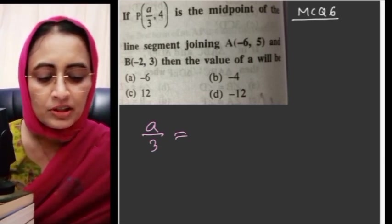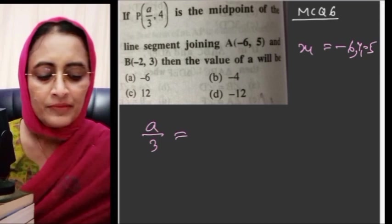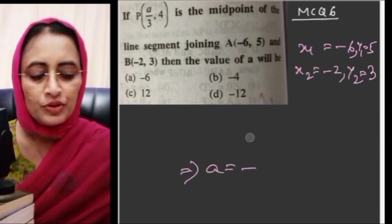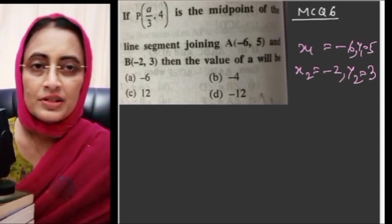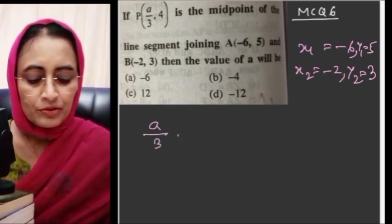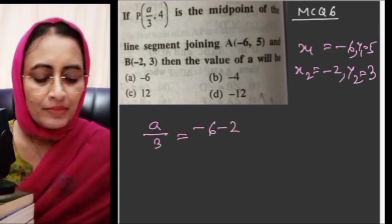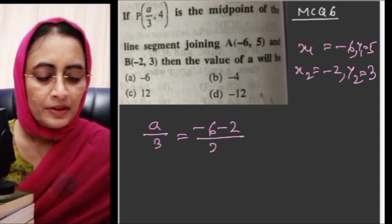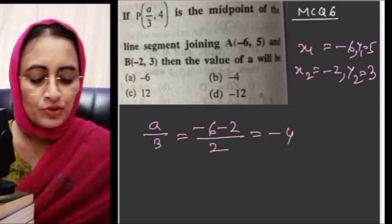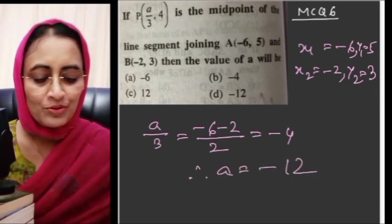x1=minus 6, y1=5, x2=minus 2, y2=3. Using the midpoint x-coordinate formula: x1 plus x2 by 2 equals minus 6 minus 2 by 2 equals minus 8 by 2 equals minus 4. Therefore A equals minus 12. The correct option is D.